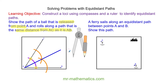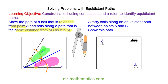This blue line identifies a path that is equidistant between AC and AB. This means all the points on this side of the line are closer to line AB, and all the points on this side of the line are closer to AC than AB.